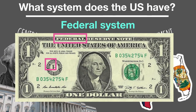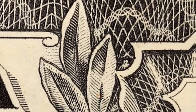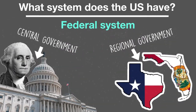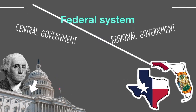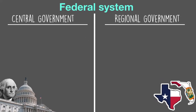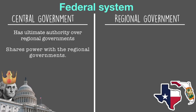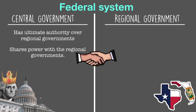Namely on your money. If you've ever spent time looking for the spider, you might have also noticed the word 'federal.' This word classifies our central and regional government's relationship. Our national government for the country in Washington DC has ultimate authority over regional governments. However, it's going to share some of that power with the regional governments.